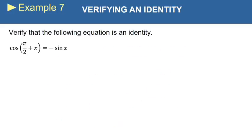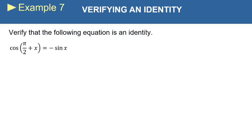Alright, let's look at another one. This one says, verify that the cosine of π over 2 plus x is equal to the negative sine of x.